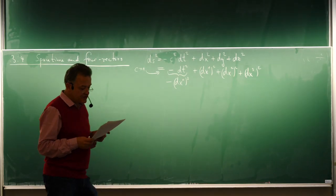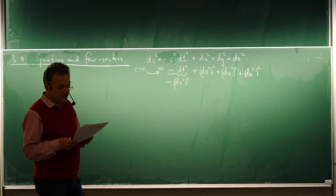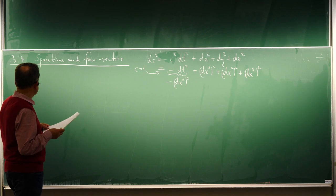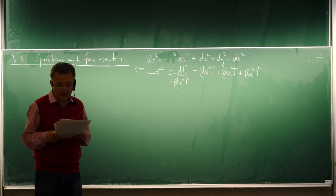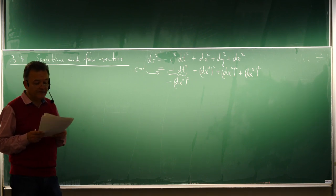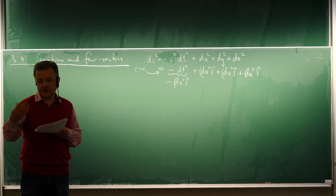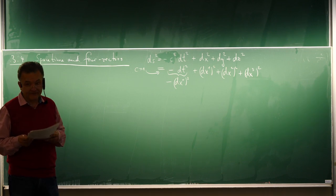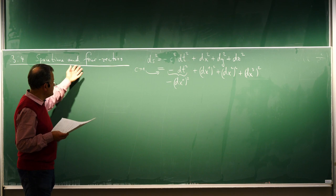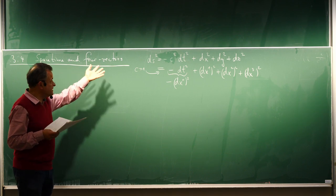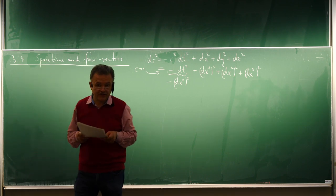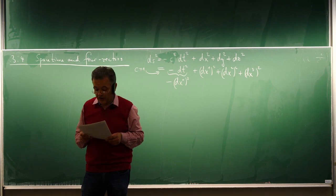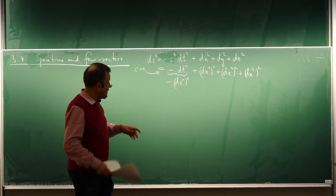Hello again to the lecture course on relativity and cosmology. Today we address section 3.4 of special relativity, which is the first section on the four-dimensional formalism. For the four-dimensional formalism, we will need what is called four-vectors, a generalization we need also for general relativity later.